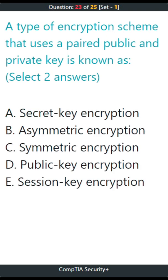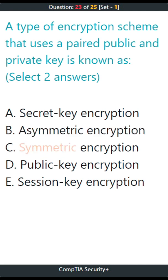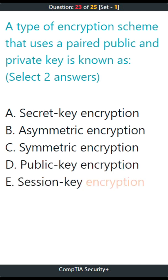Question 23. A type of encryption scheme that uses a paired public and private key is known as, select two answers: A. Secret Key Encryption, B. Asymmetric Encryption, C. Symmetric Encryption, D. Public Key Encryption, E. Session Key Encryption.